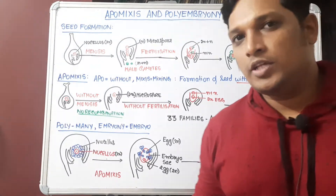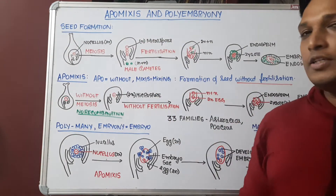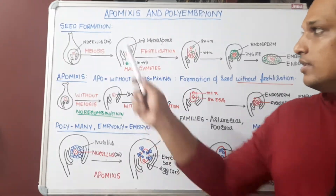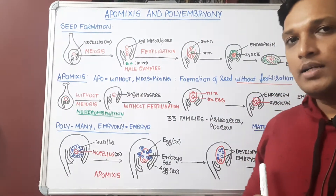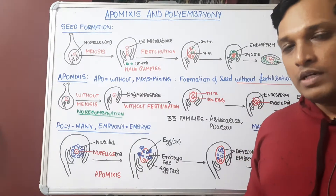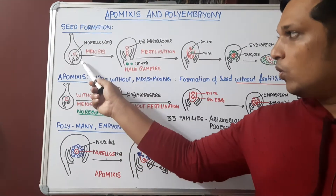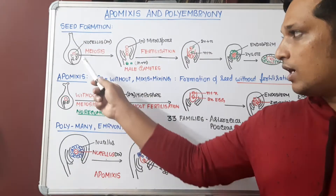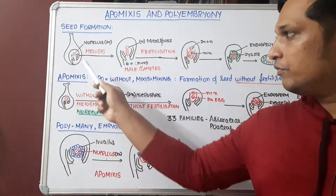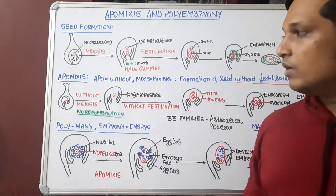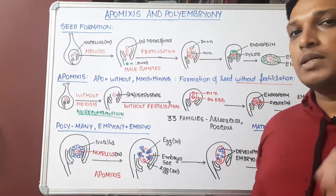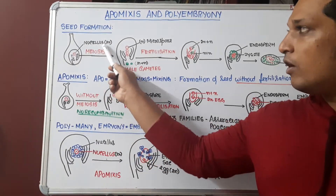Hello, good morning everyone. Today we are going to understand what is meant by apomixis and polyembryonic seed formation. How a plant forms a seed: plants have flowers, flowers have the pistil or carpel containing an ovary, and within the ovary there is an ovule. The ovule contains a diploid mother cell formed from a cell called the nucellus.